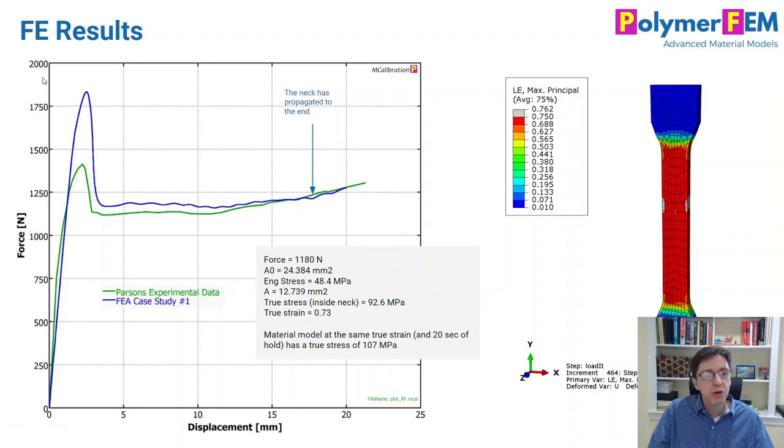force is just the reaction force on the top. In this case, it's the blue line. It goes up and it drops a lot. And then it's almost stable until the neck reaches the end of the specimen. And then we start to see an increase in the force again, because we start to pull on the tabs and they need to be deformed as well.